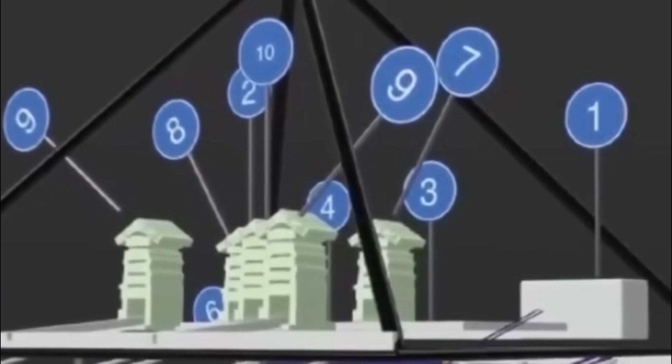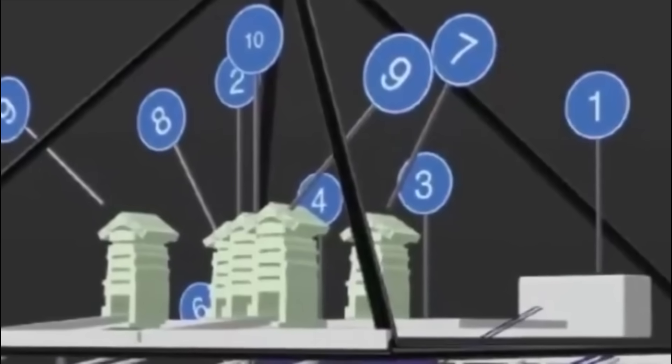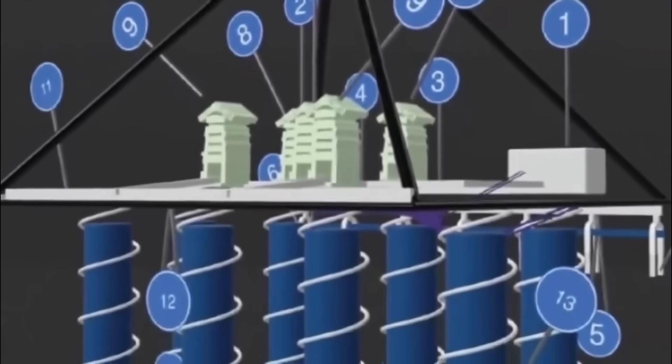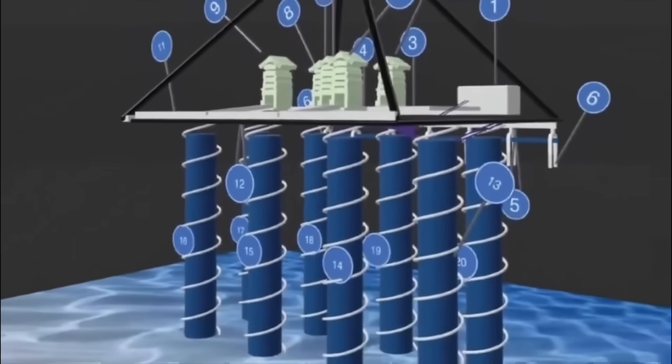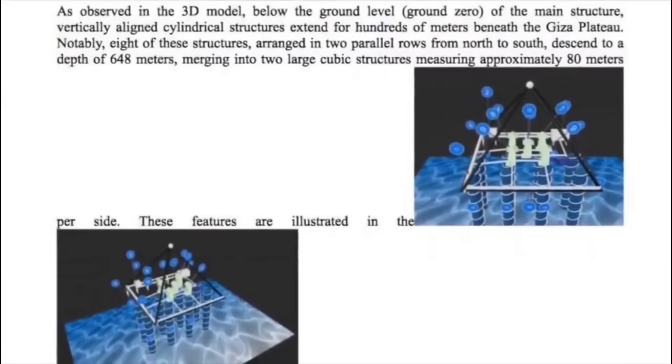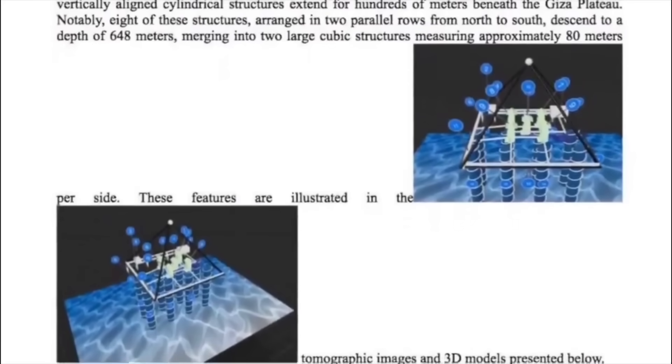But the most shocking discovery lies beneath the surface. Below ground level, radar tomography has identified vertical cylindrical structures extending for hundreds of meters beneath the pyramid. There are eight of these cylindrical wells arranged in two parallel rows descending to an astonishing depth of 648 meters.